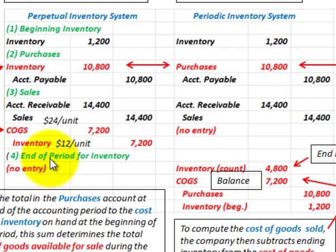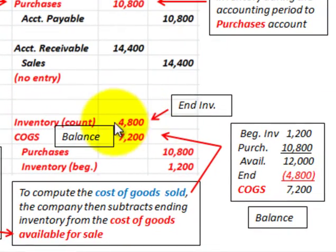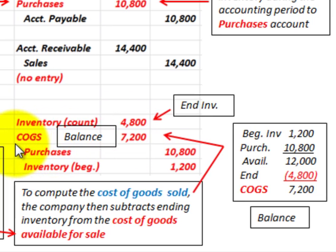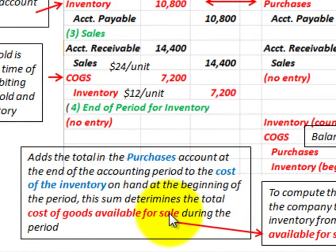Now let's look at end-of-period calculations. With the perpetual inventory system, there's no end-of-period entry since cost of goods sold is recognized continuously with each sale. For the periodic inventory system, cost of goods sold is recognized at the end of the period. You add the total of the purchases account to the cost of inventory on hand at the beginning of the period, and this sum determines the total cost of goods available for sale during the period.